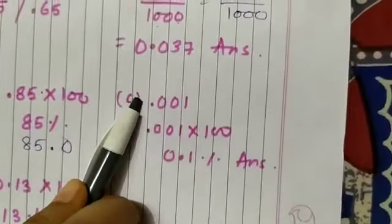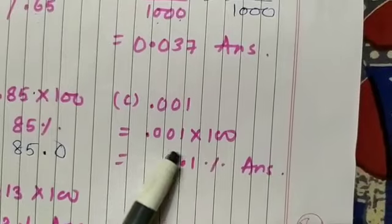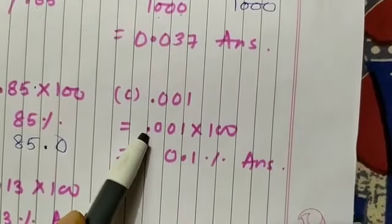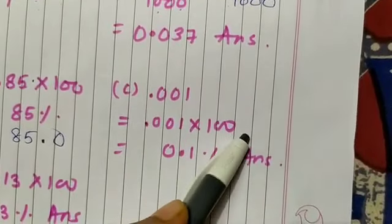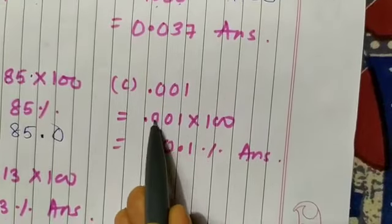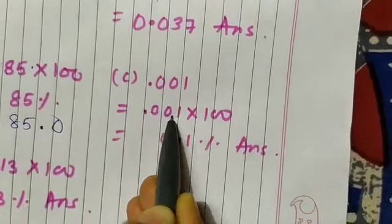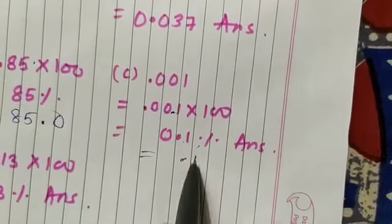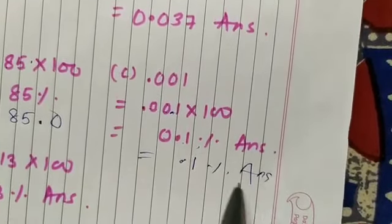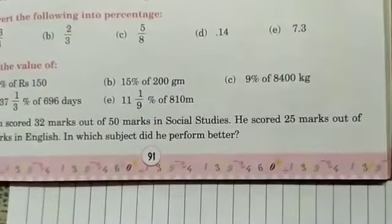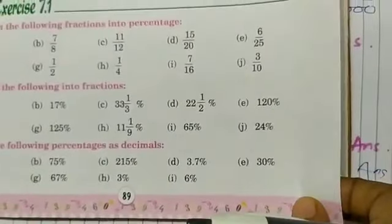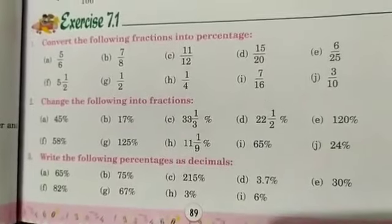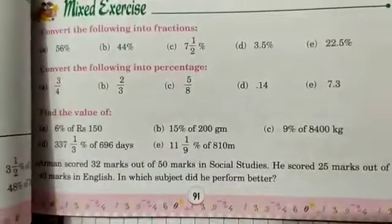And last, C number: 0.001. Same way, multiply by 100 — shift two digits to the right and put the decimal. The answer is 0.1 percent. I hope this exercise is clear. Those questions I have not solved are your homework. Complete all homework on time. Thank you.